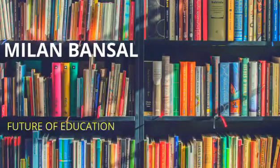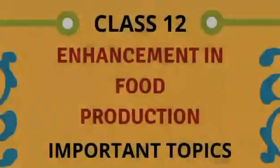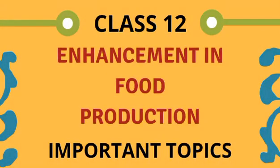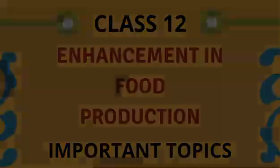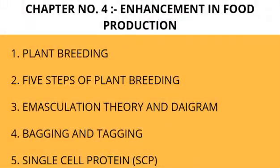My channel, my name is Milan Bansal, and today we will discuss Enhancement in Food Production, Class 12 important topics. So plant breeding is the first topic — five steps of plant breeding, then emasculation theory and diagram.